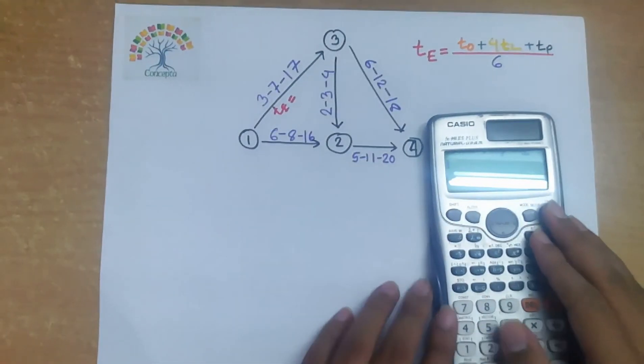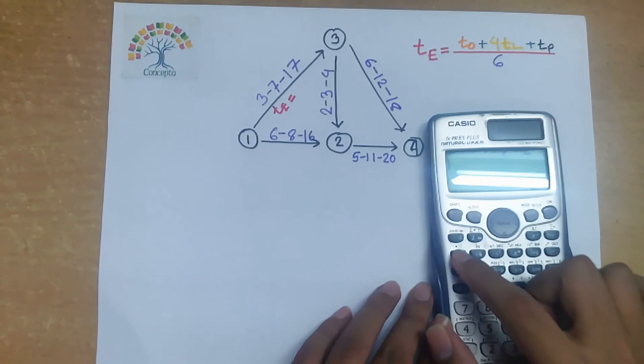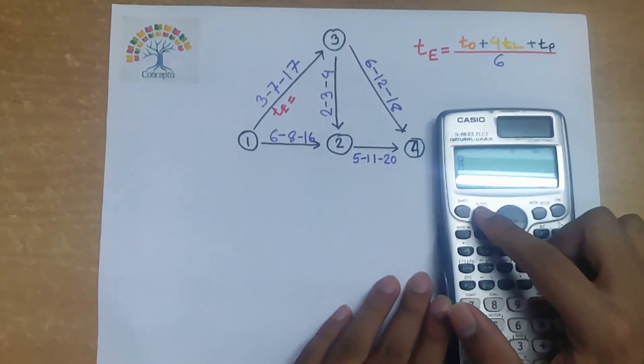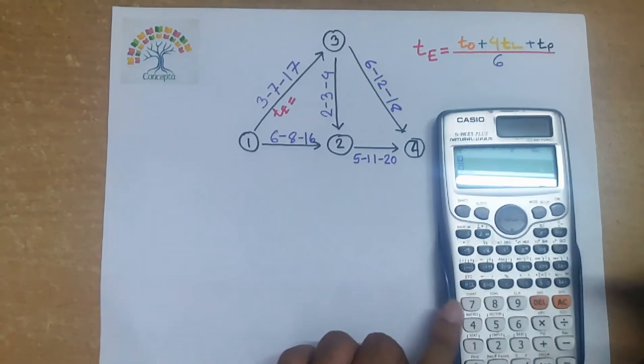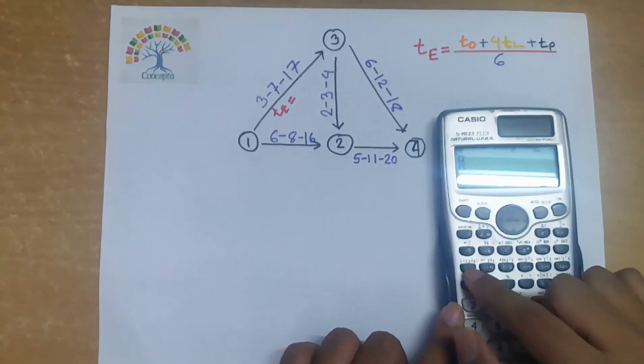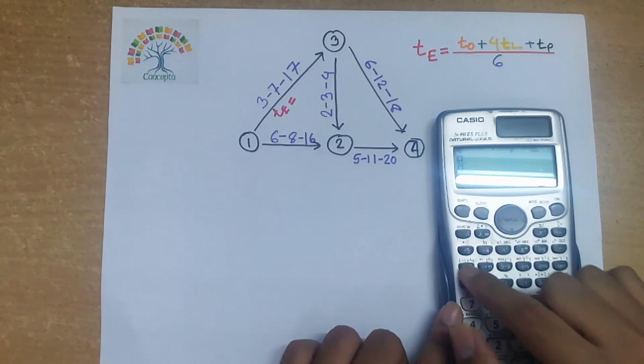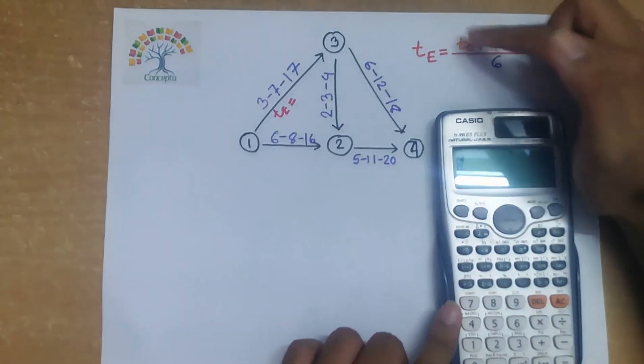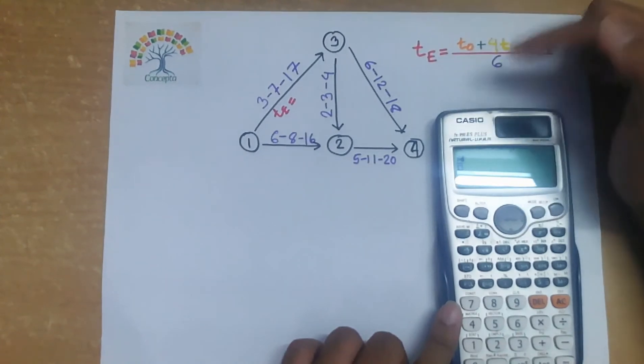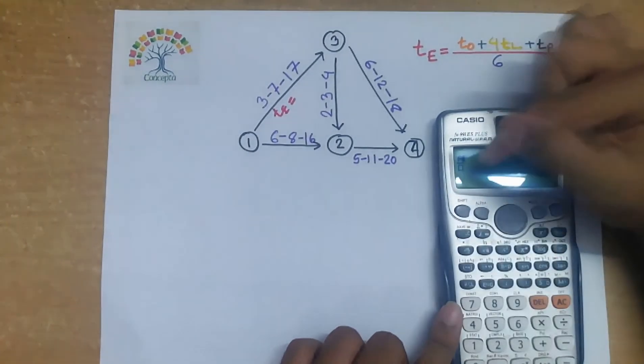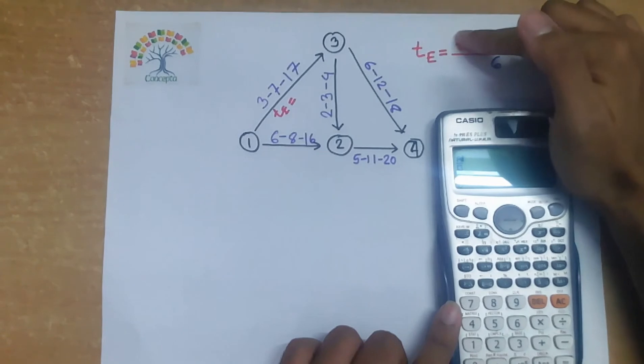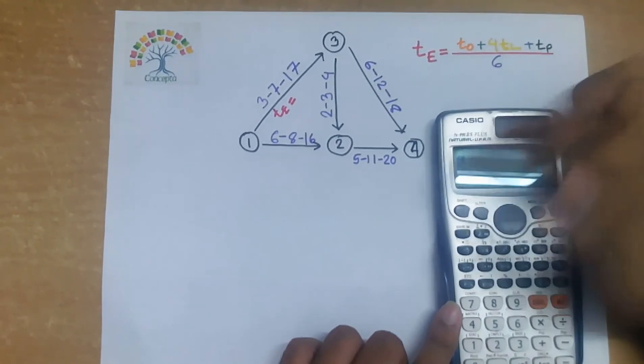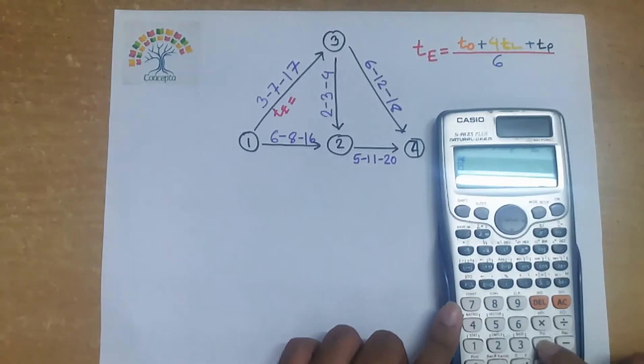First, we press the fraction button, that is this one. Press, then we will press alpha, alpha, then we will press a, alpha a. That means this button alpha a. Here a represents t0, that means we replace, we put a instead of t0, and we will input the value of t0 under a. Then put plus.